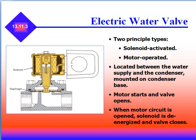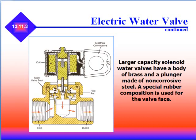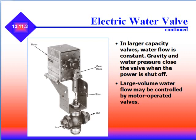The motor starts and stops the valve opening. When the motor circuit is open, the solenoid is energized and the valve closes. It consumes a very small amount of current while operating, usually between 6 to 10 watts, and may use a low voltage solenoid valve or a 120 volt solenoid valve. Large capacity solenoid water valves have a body of brass and a plunger made of non-corrosive steel, with a special rubber composition on the valve face. In large capacity valves, water flow is constant, and gravity and water pressure close the valve when the power is shut off.